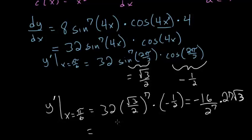So simplifying again, we'd have minus 16 times 27 divided by 2 to the 7th power, which is 128, multiplied by the square root of 3.